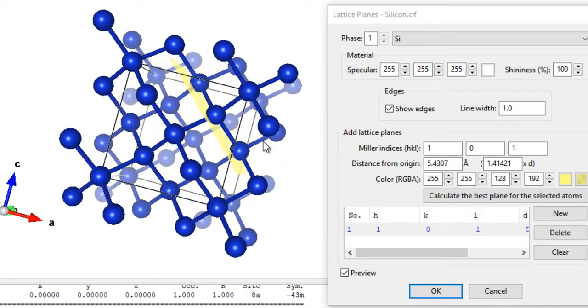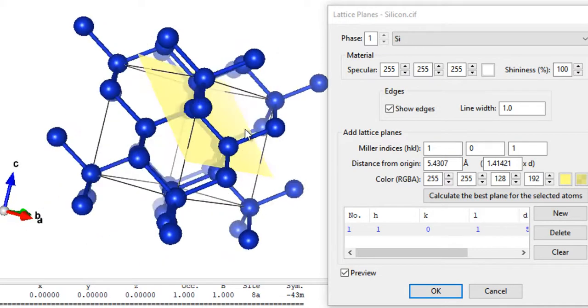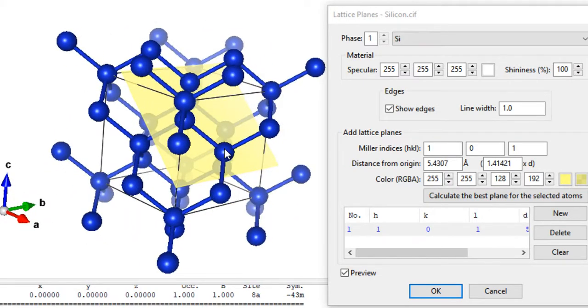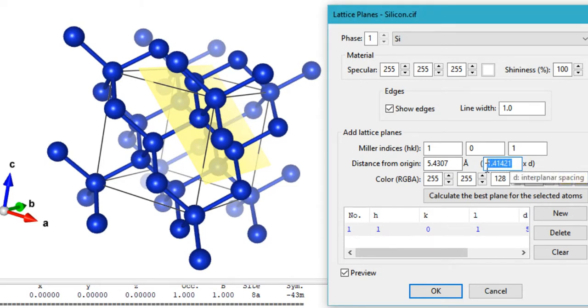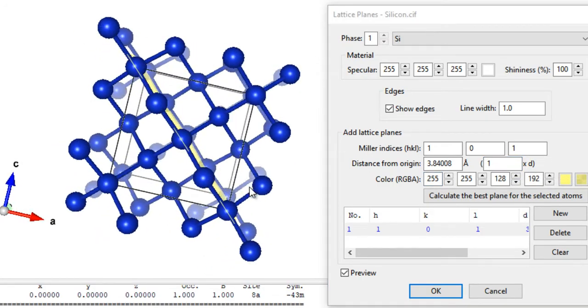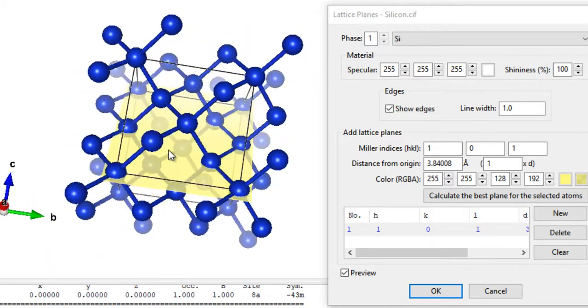You might notice that it's not placed right where you would want it to. For example, in my imagination I would place the 101 plane extending from this edge to this edge. However, it's displaced a little because we have a distance from the origin set to 1.4 times the interplanar spacing. Just go ahead and change it to 1, and then voila, you have the lattice plane being displayed exactly how you would imagine it.